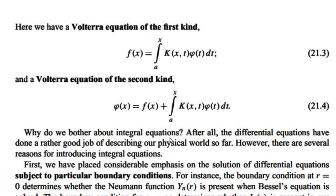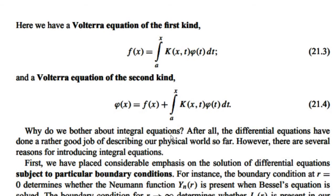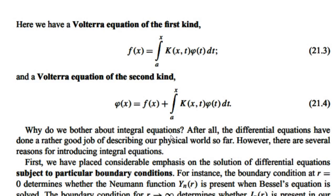The second classification is the Volterra equation. The Volterra equation of the first kind: f(x) = integral from a to x of k(x, t) φ(t) dt. The Volterra equation of the second kind: φ(x) = f(x) + integral from a to x of k(x, t) φ(t) dt.